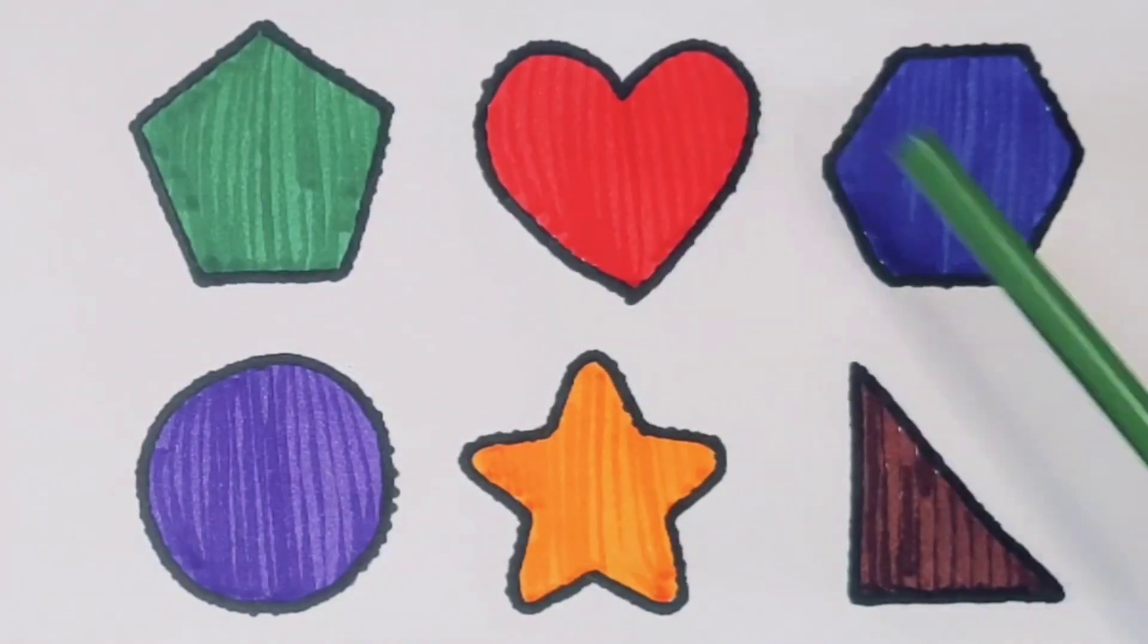What we learned: green color pentagon, red color heart, blue color hexagon, purple color circle, orange color star, chocolate color rectangle.